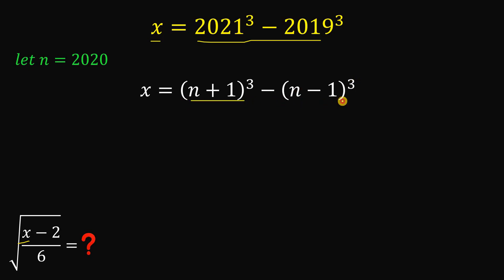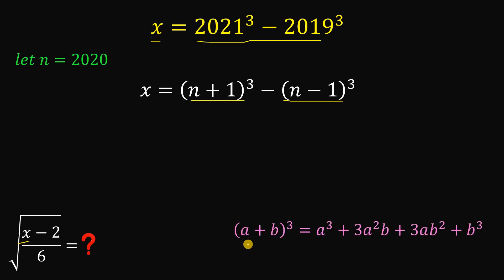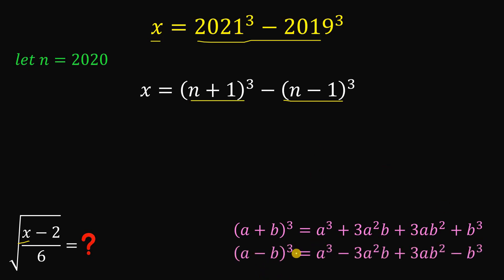To expand (n+1) cubed and (n-1) cubed, we use the binomial cube identity. If we have (a+b)³, we expand it as a³ + 3a²b + 3ab² + b³. And if we have (a−b)³, we expand it as a³ − 3a²b + 3ab² − b³.